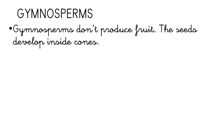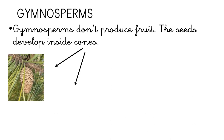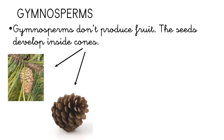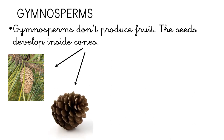Now we are going to see the gymnosperms. Gymnosperms don't produce fruit — the seeds develop inside cones. This is a cone, and as you can see, the cone is closed. It means that the seeds are inside the cone. This is the cone when it finally opens and the seeds fall down to the ground.